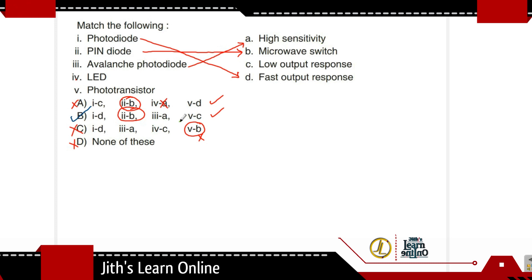The photo transistor has a low output response, which is a slow output response compared to other detectors. With these matches confirmed — PIN diode to microwave switch, photo diode to fast output response, avalanche photo diode to high sensitivity, photo transistor to low output response — the answer is option B.